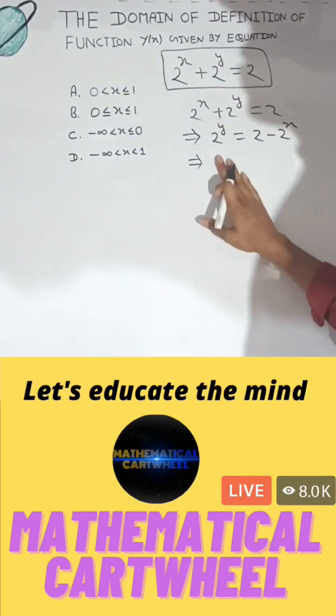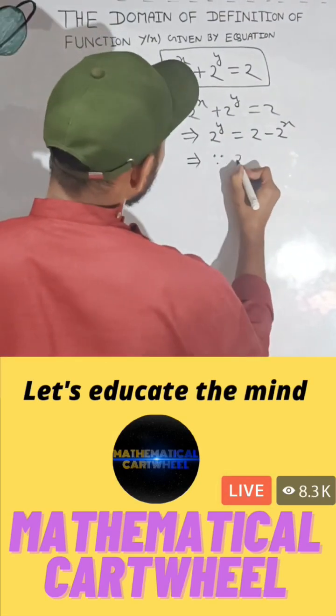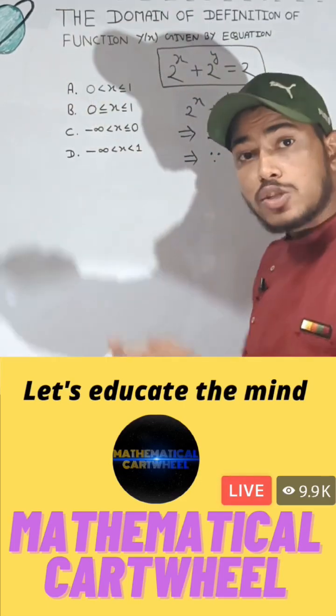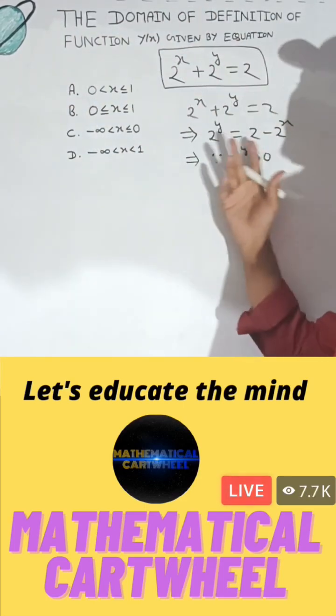Now as you can clearly see here that 2 to power y is an exponential function. So you can write here as 2 to power y will be always positive. So if left side is positive, then right side should also be positive. Only then this both function will be equal.